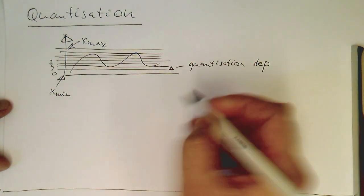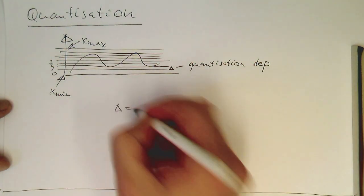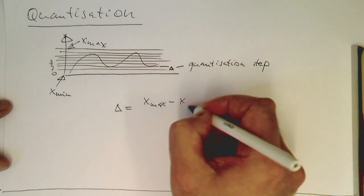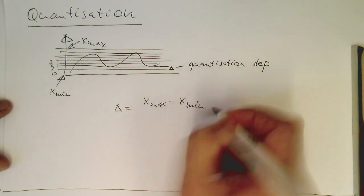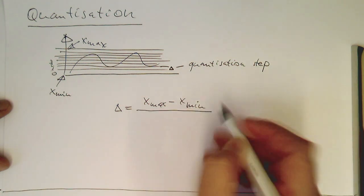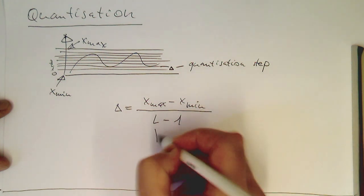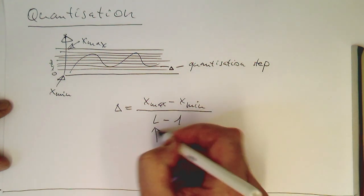So then our quantization step Delta is defined by x_max minus x_min divided by L minus 1. These are the different number of quantization levels.